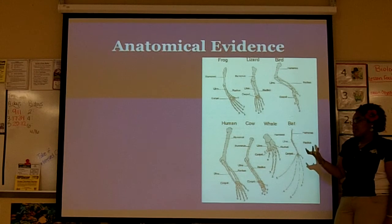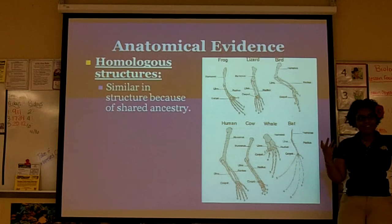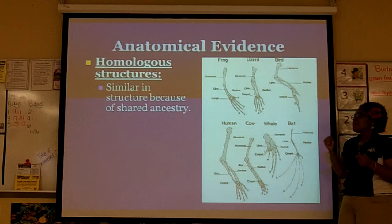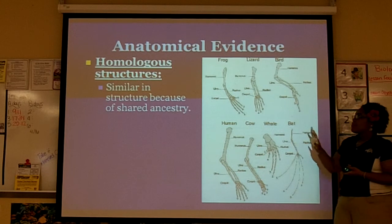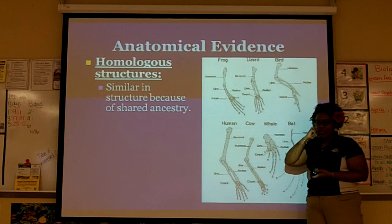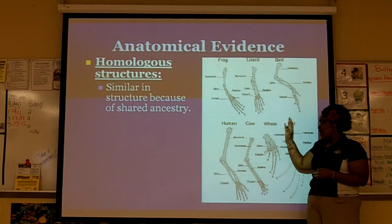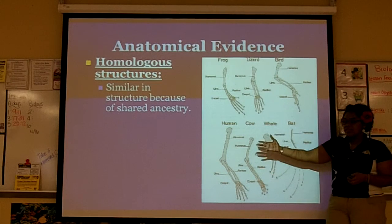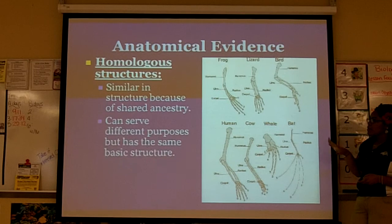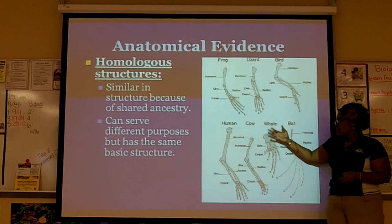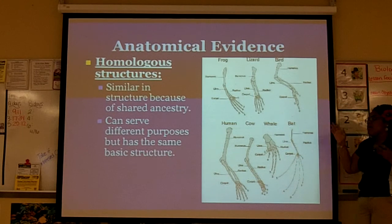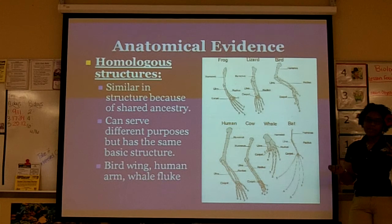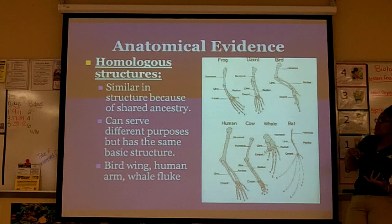We have anatomical evidence. The first concept is homologous structures — structures that are similar in structure because of a shared ancestry. For example, the human arm, cow forearm, whale fin, and bat wing all share similar bones like the ulna and radius, with certain parts of the bone being very similar. Bird wing, human arm, whale fluke — same basic structure, different purpose.